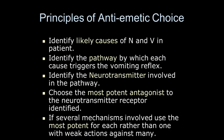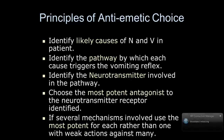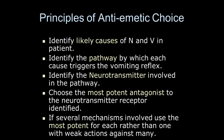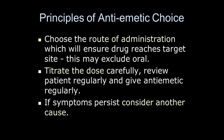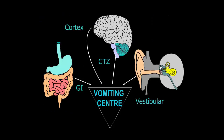Nausea and vomiting: we covered this in second year but I want to quickly revise the principles of anti-emetic choice. This comes back to identifying the cause of nausea and vomiting, identifying the pathway by which each cause triggers the vomiting reflex, identifying the neurotransmitter involved, and choosing the most potent antagonist to that neurotransmitter receptor. If several mechanisms are involved, use the most potent drug for each rather than one with weak actions against many. Choose a route of administration that ensures the drug reaches the target site — this may exclude oral. Titrate the dose regularly and review the patient regularly.